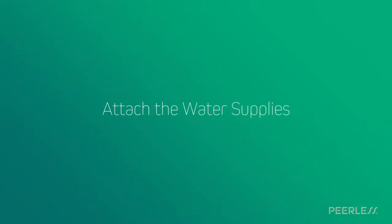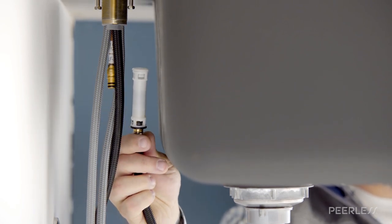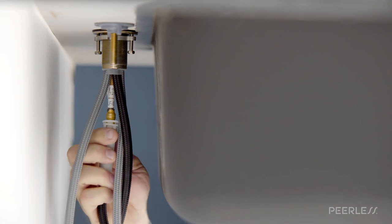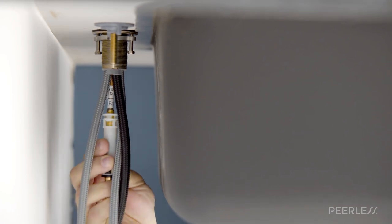Next, attach the water supplies. Be sure the pullout is oriented as shown and attach the pullout hose by firmly pushing it onto the faucet outlet until it clicks.